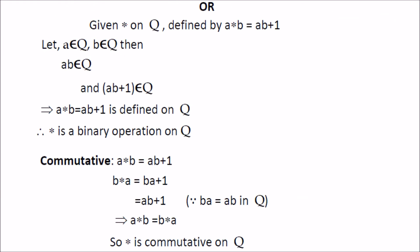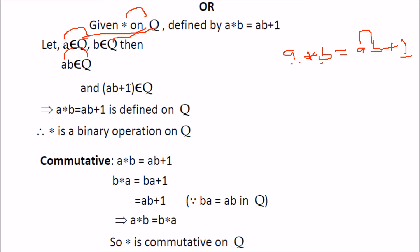The second part defines a star operation on Q by a star b equals ab plus 1. Since a and b belong to Q, a times b belongs to Q, and adding 1 keeps it in Q. So the operation is defined on Q, making it a binary operation.